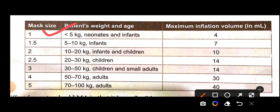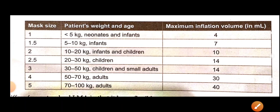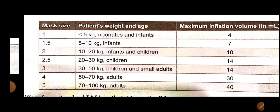To confirm the LMA table: less than 5 kg is size 1; 5–10 kg is size 1.5; 10–20 kg is size 2; 20–30 kg is size 2.5; 30–50 kg is size 3. For a 15 kg child, the answer is size 2. You have to memorize this table — there is no trick, just learn it.